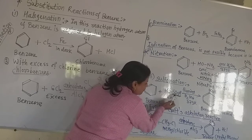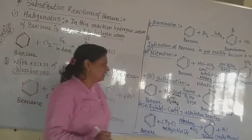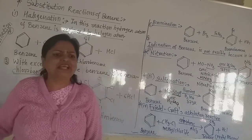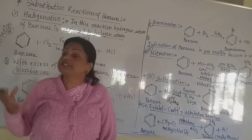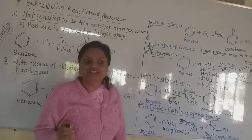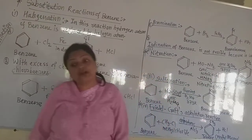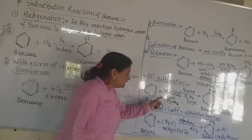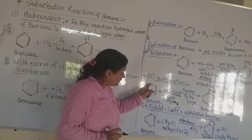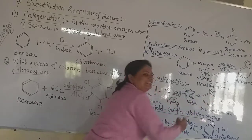For sulfonation, fuming sulfuric acid is required — fuming means vapors are coming out, very very concentrated. SO3 gas gets bubbled into H2SO4 to form this fuming sulfuric acid, H2S2O7, and it is required at very high temperature, about 373 Kelvin, that means 100 degrees centigrade. The SO3H separates: OH and the hydrogen already on the carbon atom of benzene form a water molecule, and the SO3H group attaches in its place.